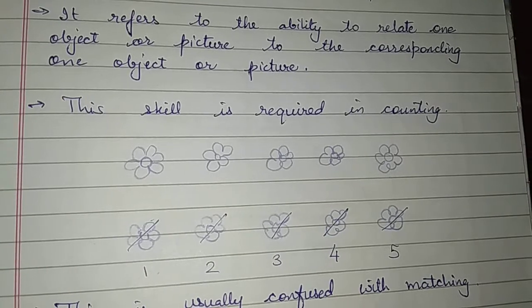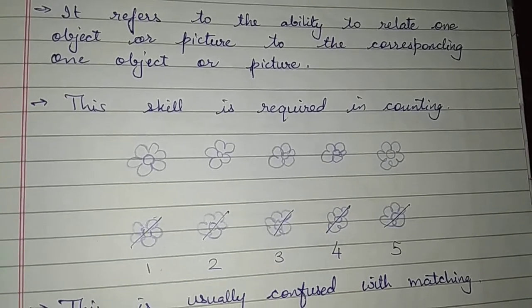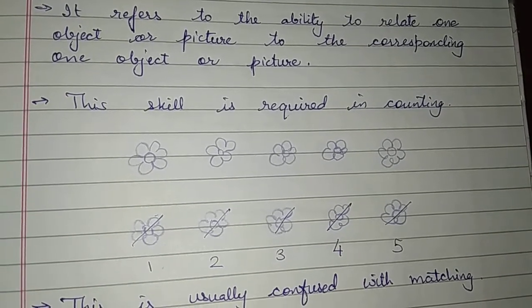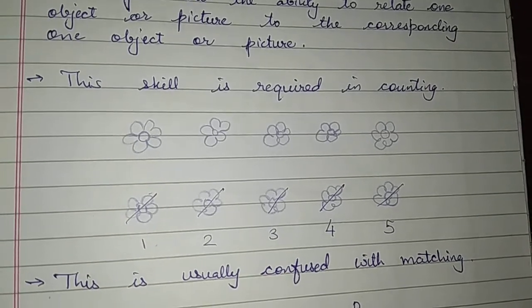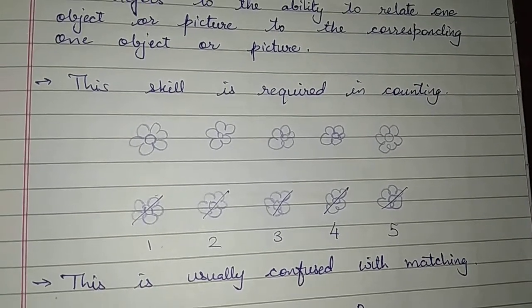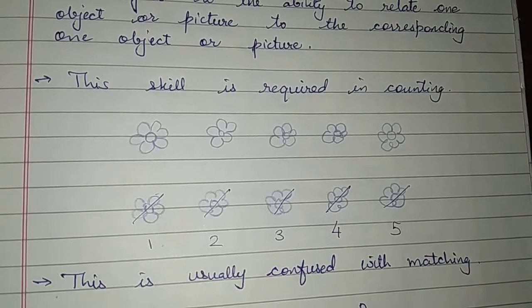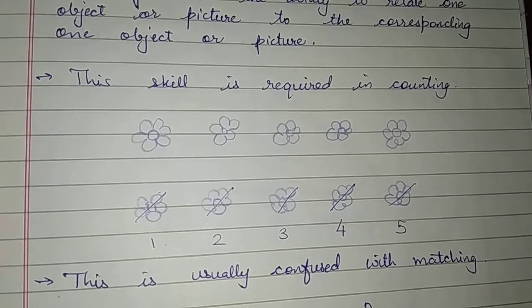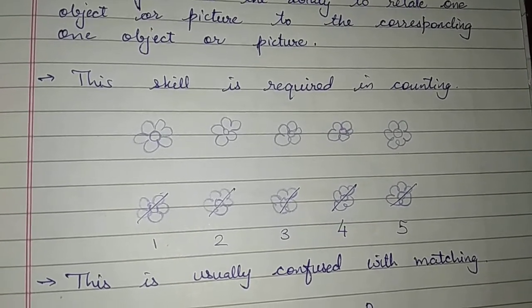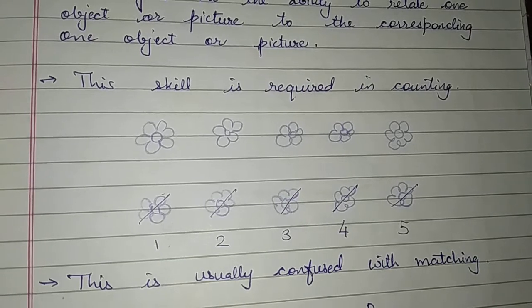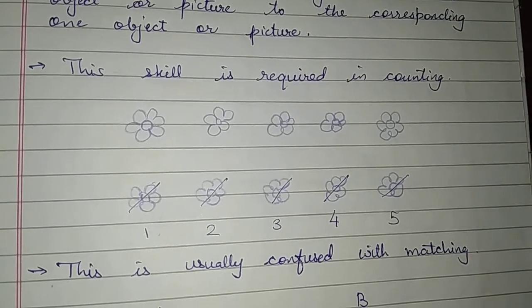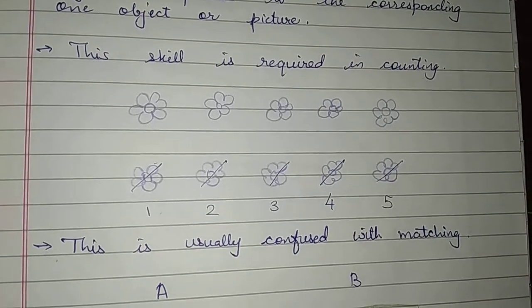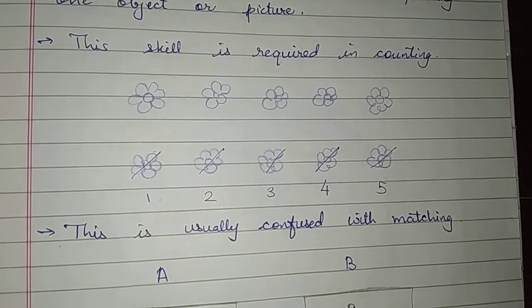Initially, when the child starts counting, the child may count the same object twice. To avoid this error, the better technique is to cut the item and write 1. Again, cut the second item and write 2. This helps the child to practice with one to one correspondence.